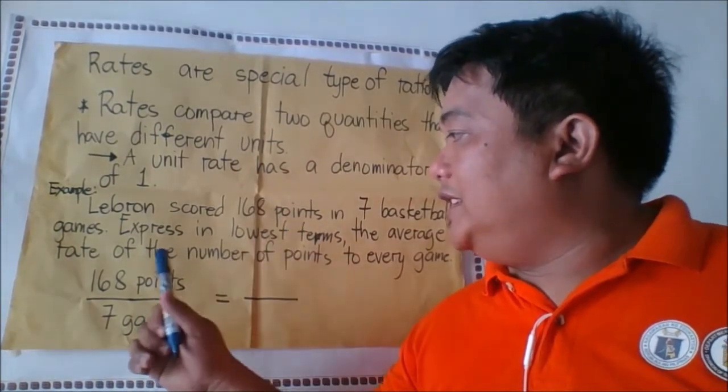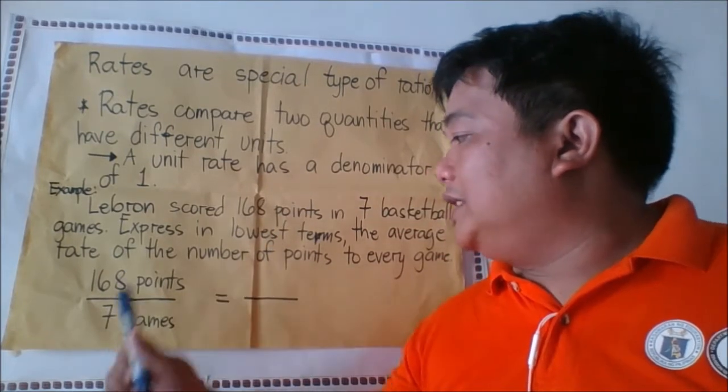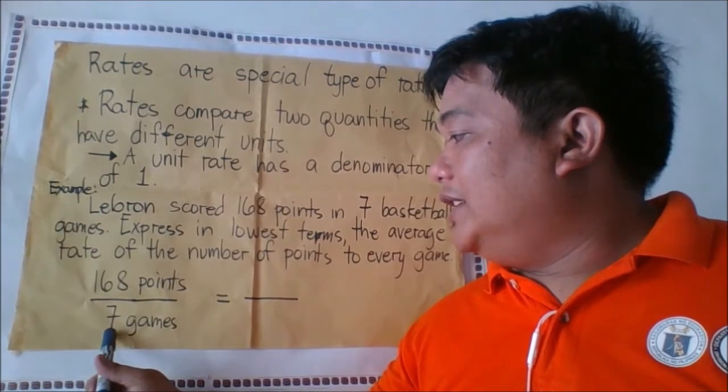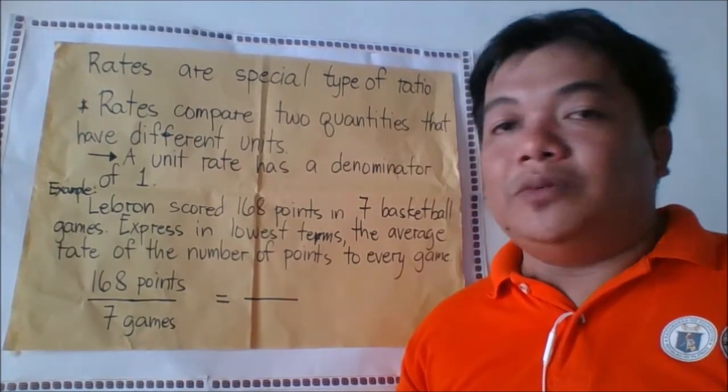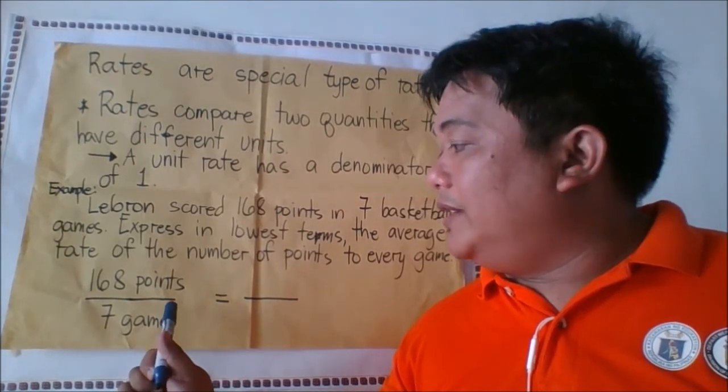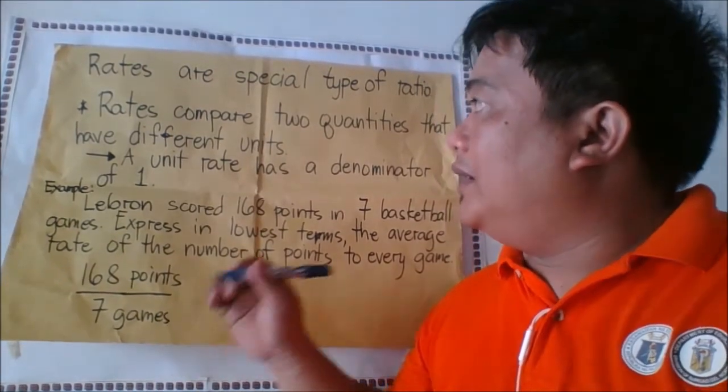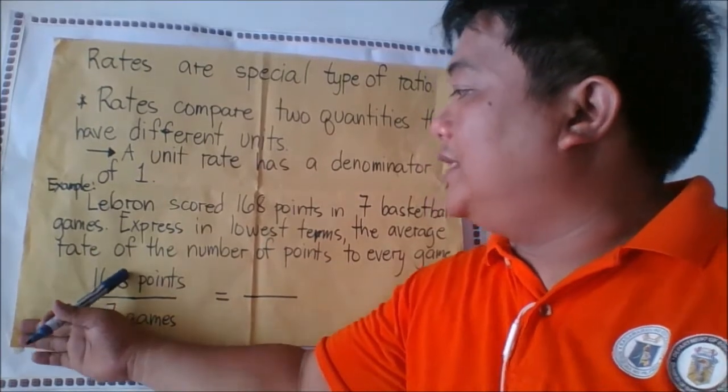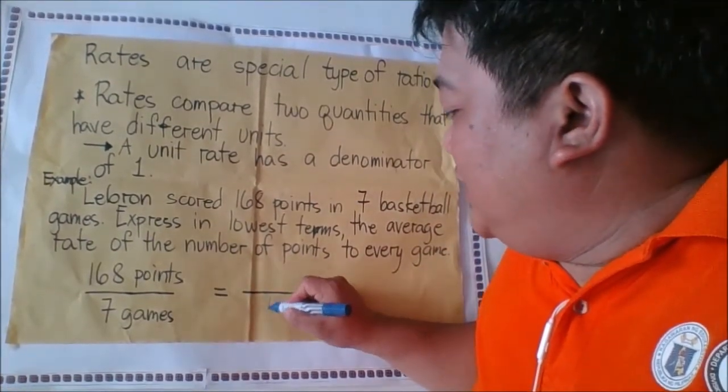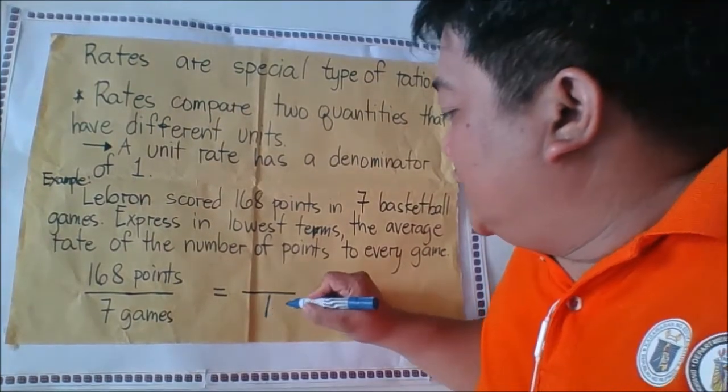We have here the ratio of points and the ratio of basketball games. So we have 168 points and 7 games. We will equate this following ratio with the rate. The rate has the denominator of one, so one game.